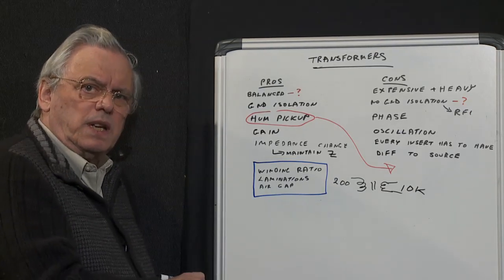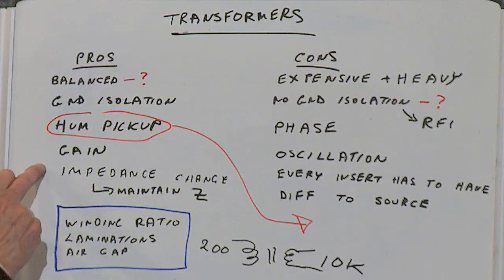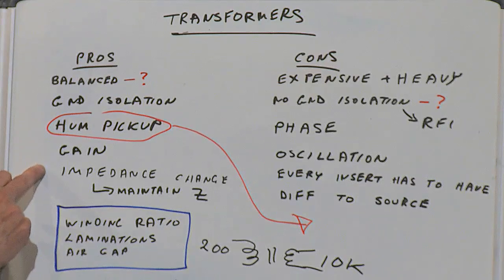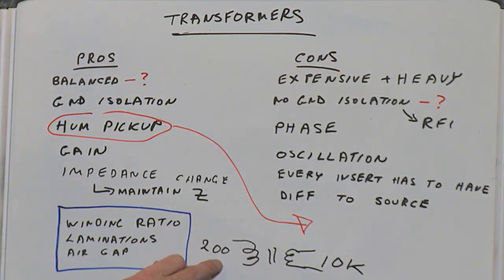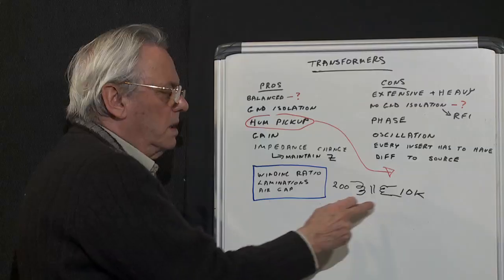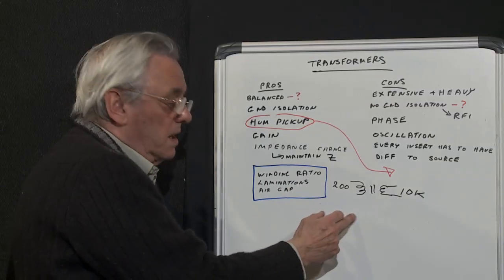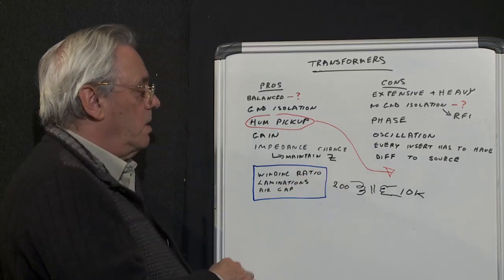You can also change impedance very readily in a transformer. This is another example: we're going from 200 ohms to 600, we can go from 10k down to 600 and so on.